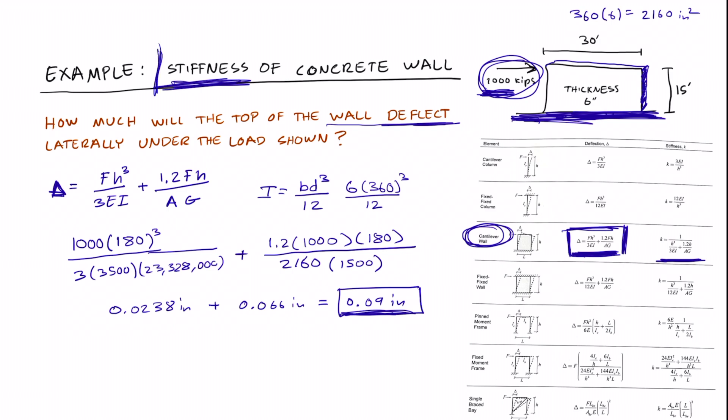But we still need to find what the stiffness of the concrete wall is. And now that we've found the deflection, it's actually really easy. Because we know that stiffness equals the force divided by delta. So we know the force and we know delta. So 1,000 divided by 0.09 inches equals 11,000 kips per inch. That's the stiffness of this concrete wall.